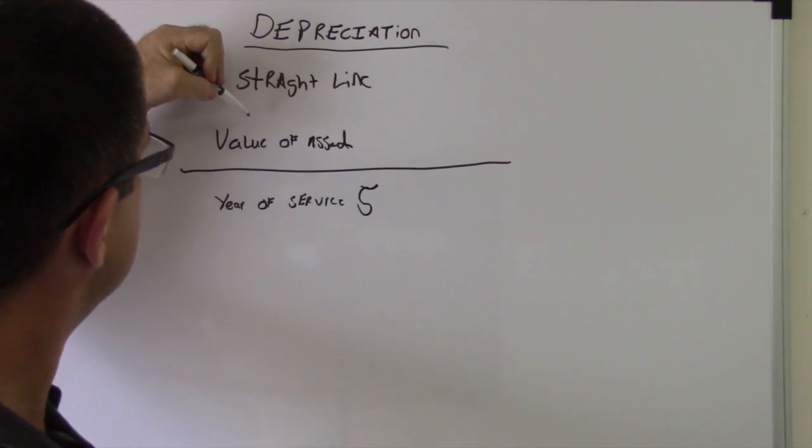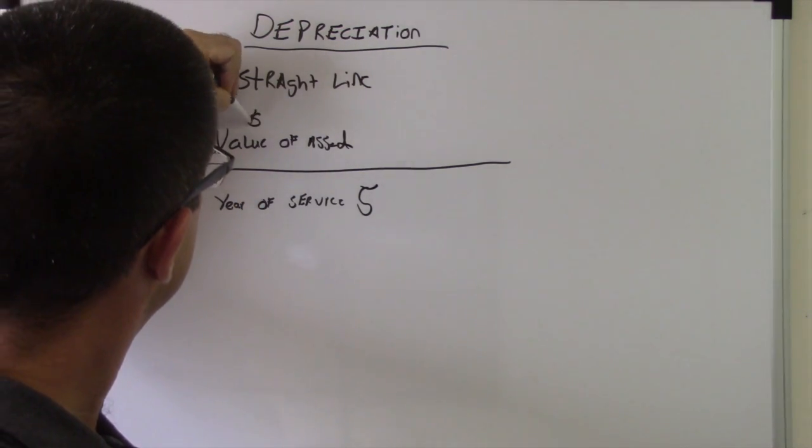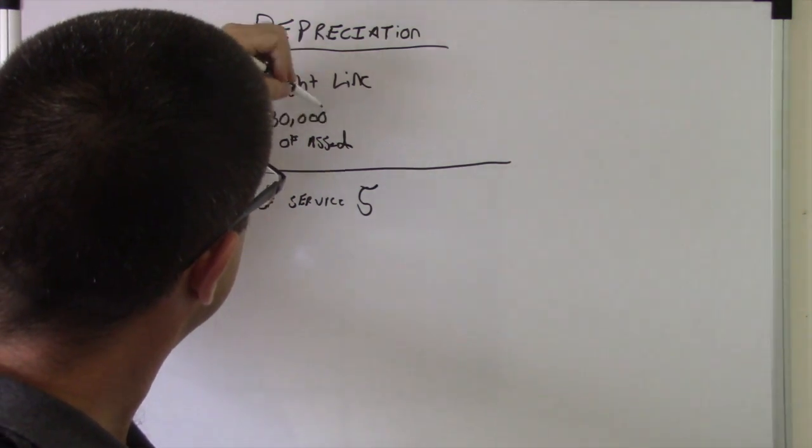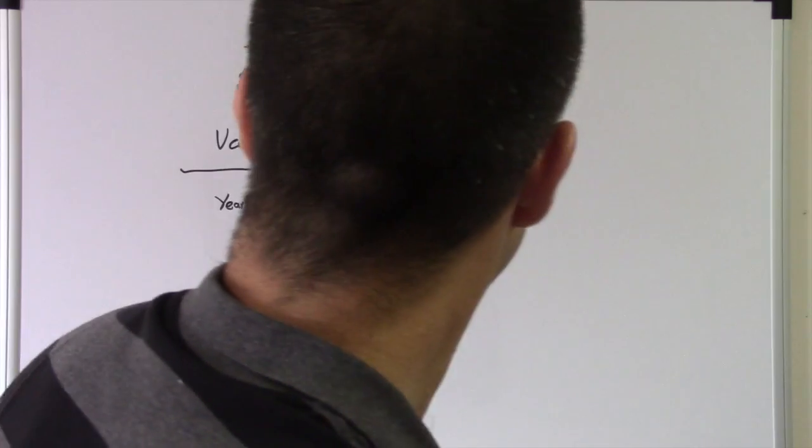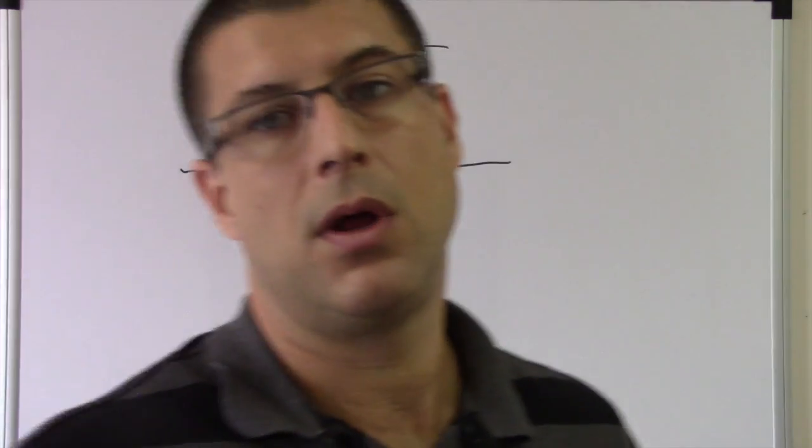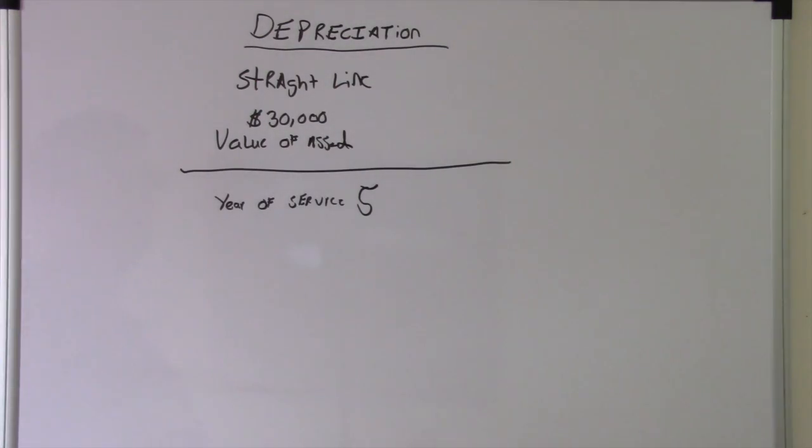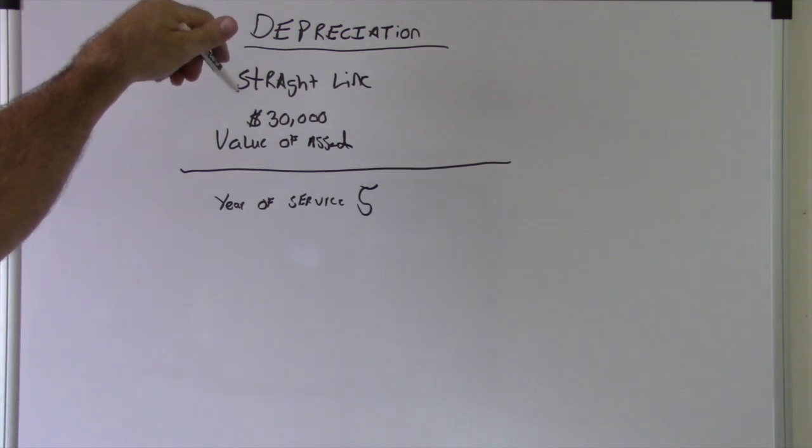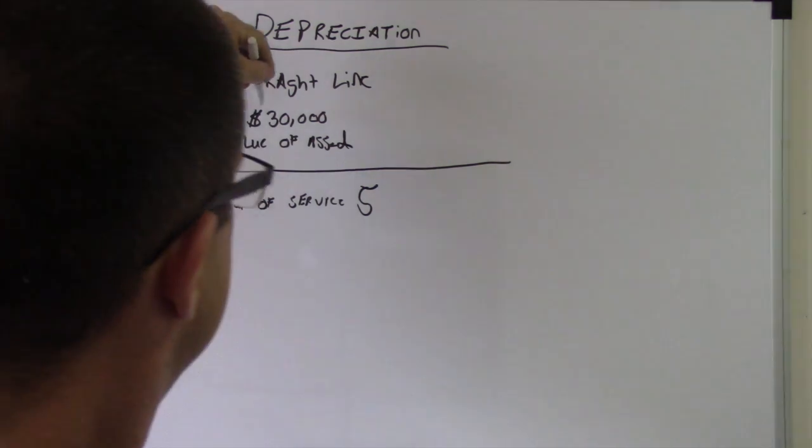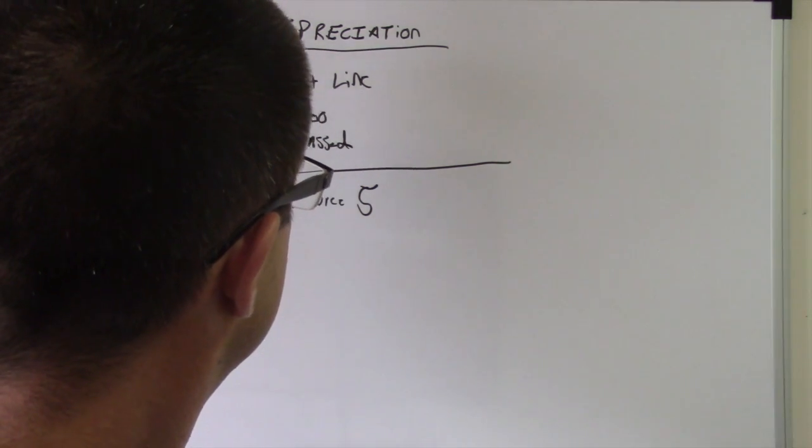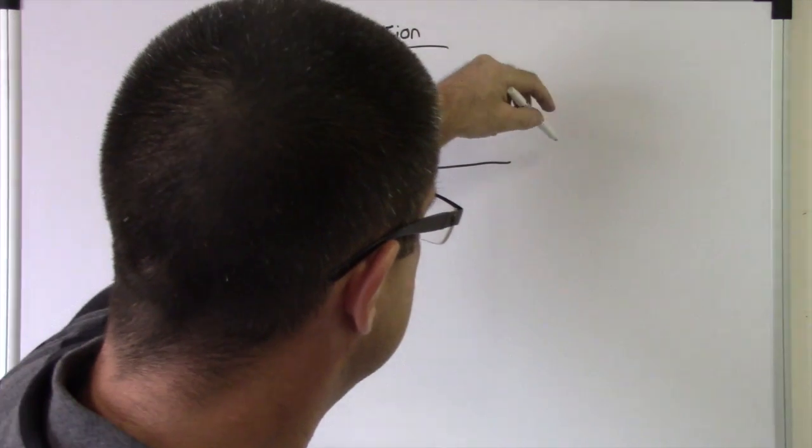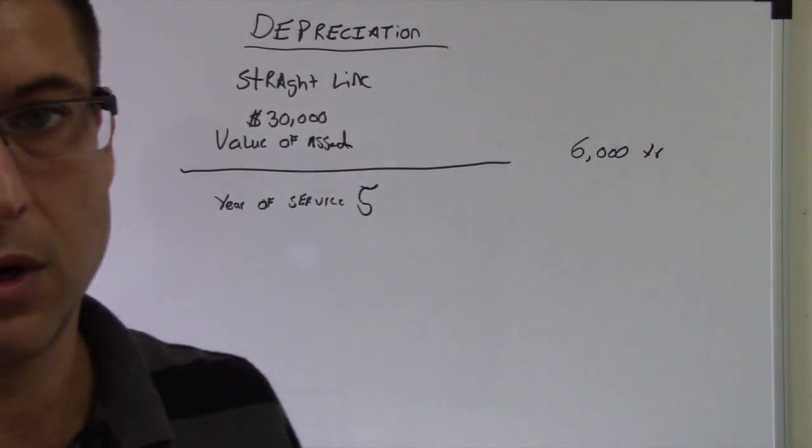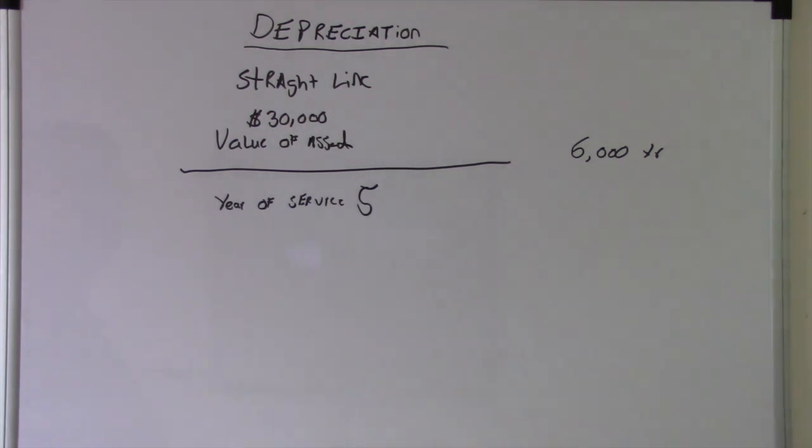Value of asset: $30,000. So that would be $6,000. Thirty thousand divided by five, that's $6,000, $6,000 a year. So that's saying after one year, your truck is gonna be worth $24,000.